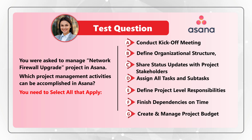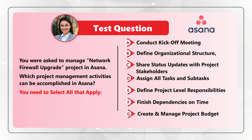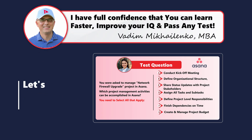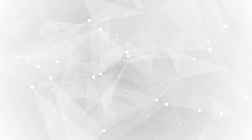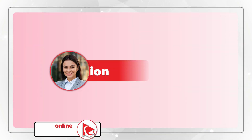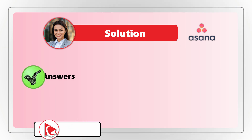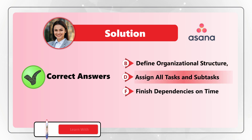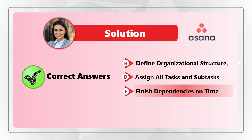Take a close look — maybe pause this video to see if you can come up with the answer. I think the correct answers here are choices B, D, and F. Choice B: Define organizational structure. Choice D: Assign all tasks and subtasks. And Choice F: Finish dependencies on time.